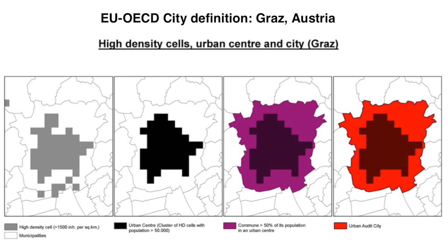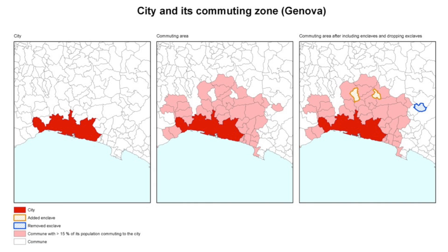Here you see a representation of Graz in Austria. On the left, we found all the high-density cells with at least 1,500 inhabitants. Then we dropped the smaller ones and glued the rest together, because there are at least 50,000 inhabitants. Then we found the municipalities with at least half their population in that urban center, and then it becomes a city. After we create a city, we create a commuting zone — these are all the municipalities that send 15% of their employed population to that city. Here you can see an example of Genova in Italy, where in light pink you see all the municipalities that have that share. Then we fill the gaps, drop the non-contiguous ones, and we have a commuting zone.